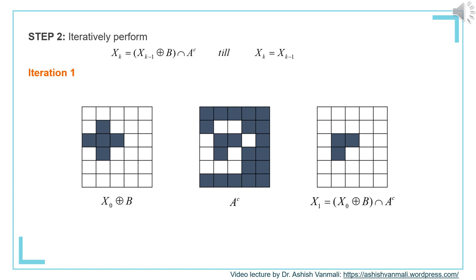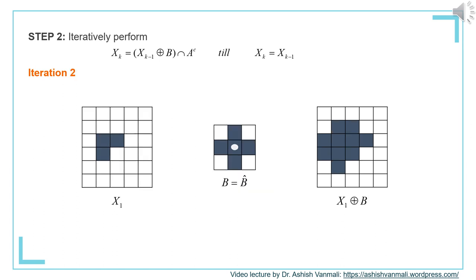We will take the intersection of the result of dilation and A complement. The result of dilation is in the first figure, A complement in the second figure, and the corresponding intersection is in the third figure — that is our X_1. The A complement has prevented the dilation result from going outside the region to be filled. We check X_1 with X_0; they are not same, so we will start iteration 2.